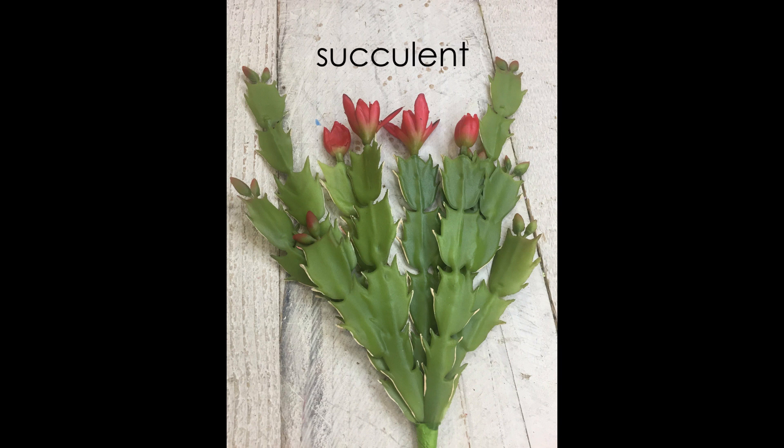Last but certainly not least, and my very favorite type of stem, is a succulent stem, which retains water so that the plant can grow in dry conditions. Succulent stems expand to store water, which gives them a very swollen appearance. Most cactuses have succulent stems.